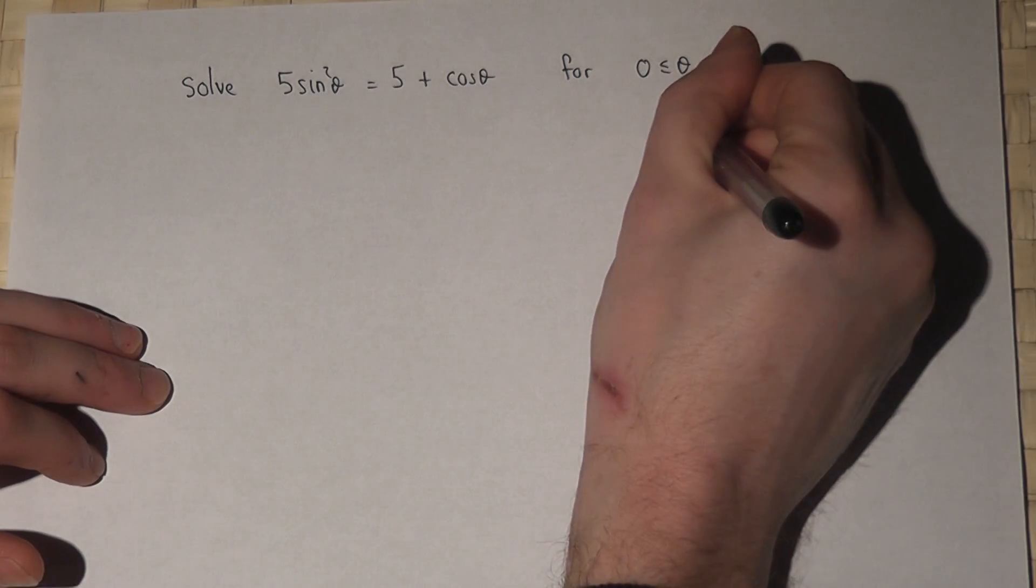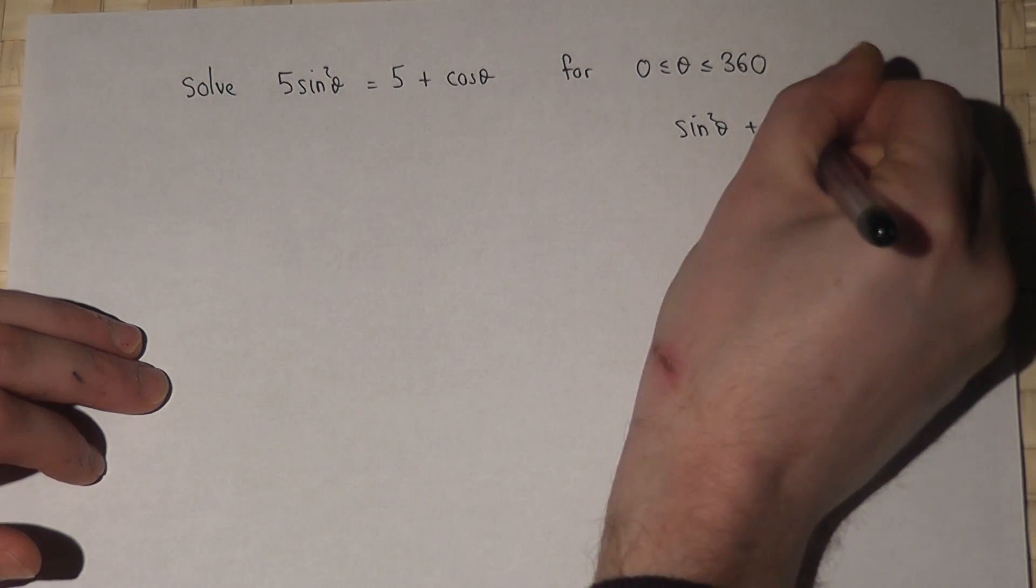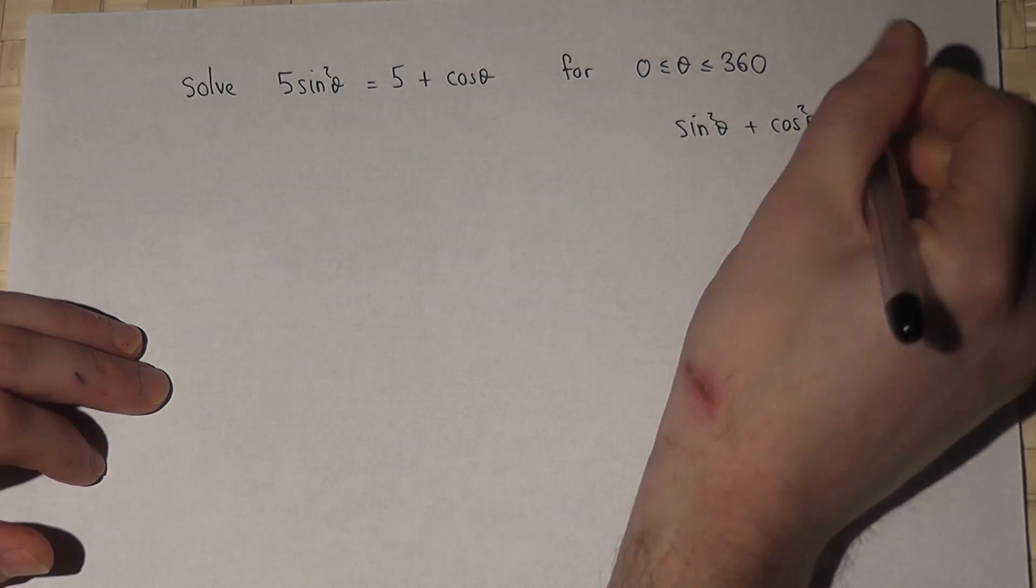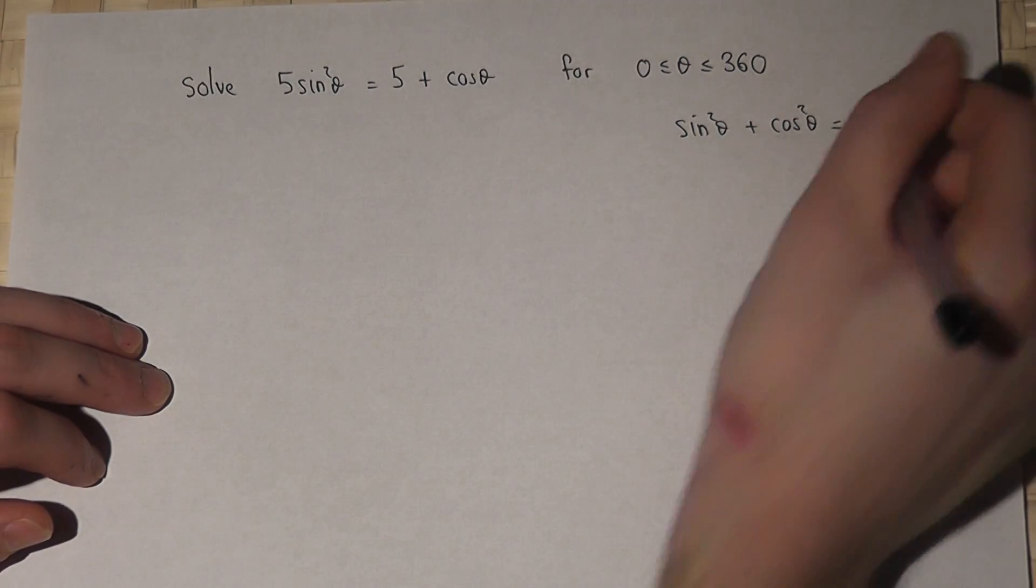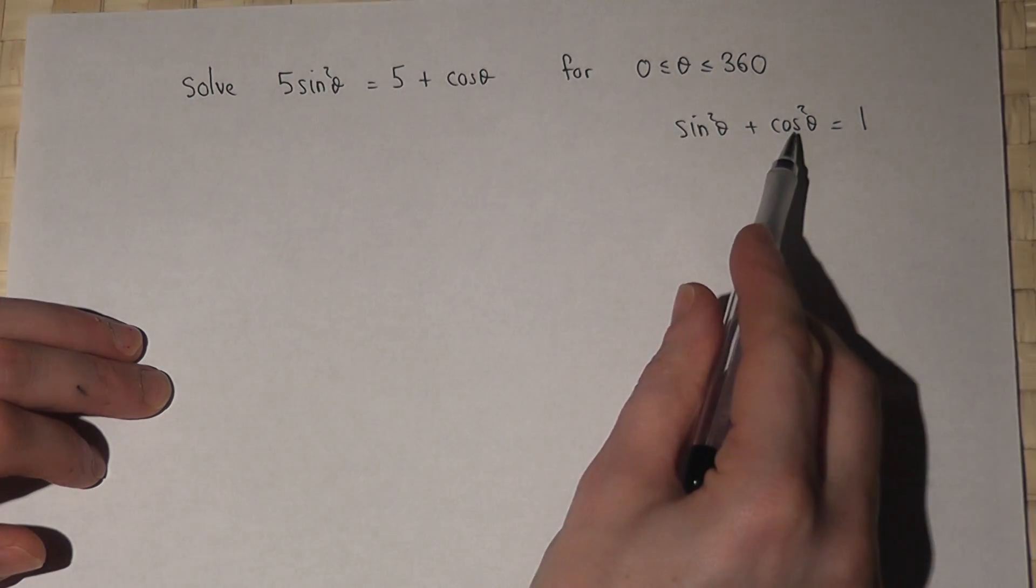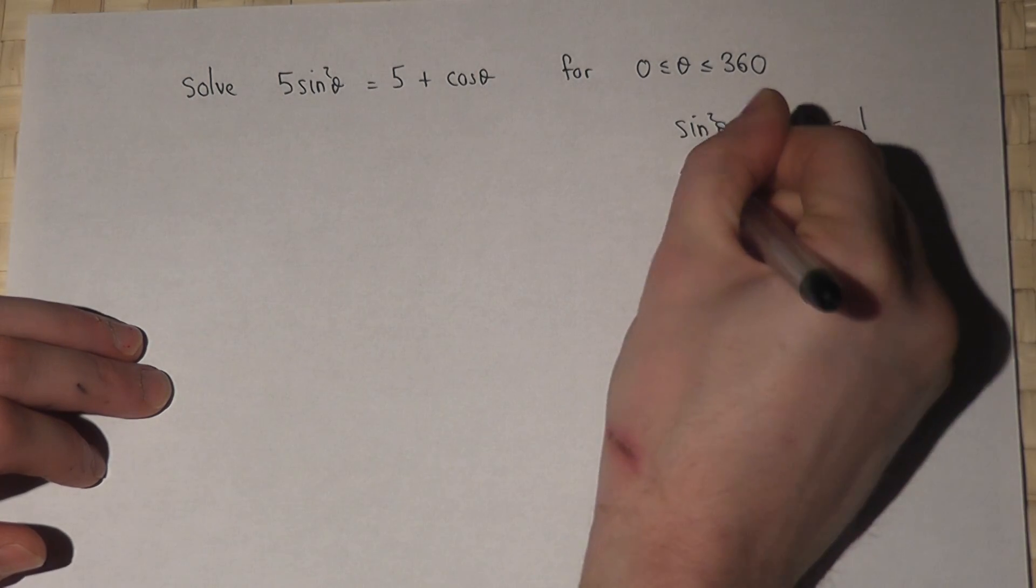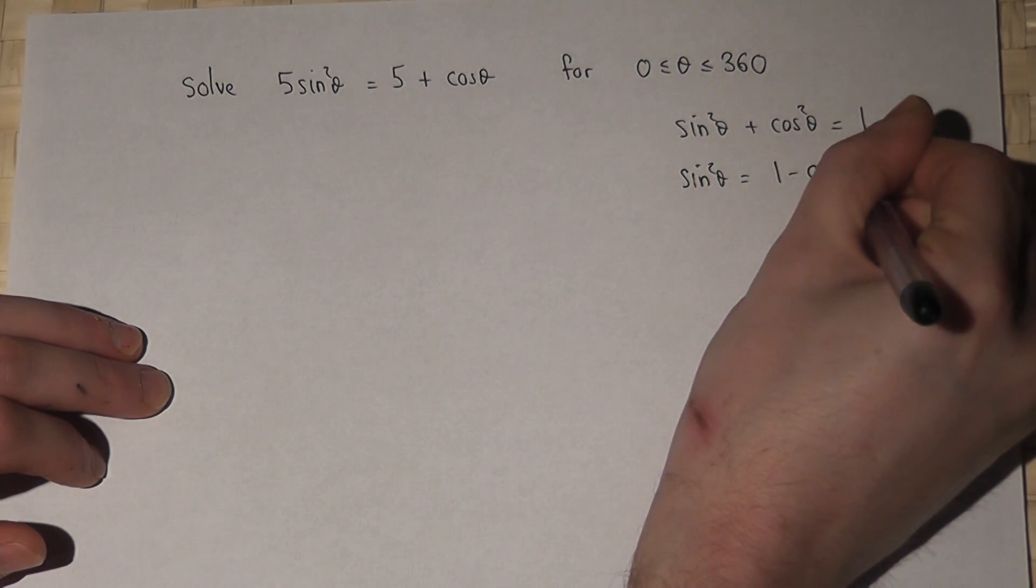However, there's one key identity which you must know, which is that sine squared theta plus cosine squared theta equals 1. So I can find sine squared in terms of cosine. Sine squared theta equals 1 minus cosine squared theta.